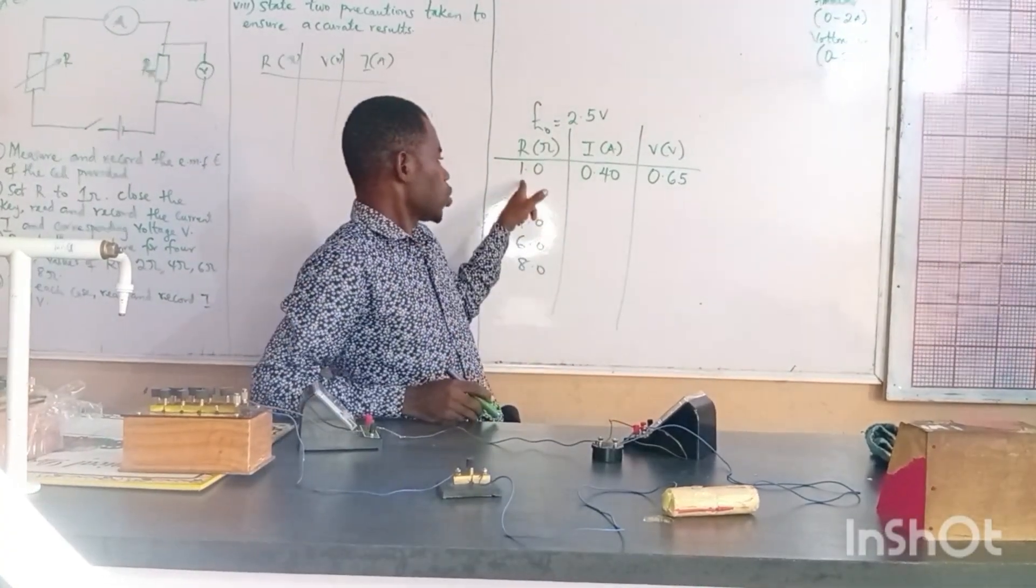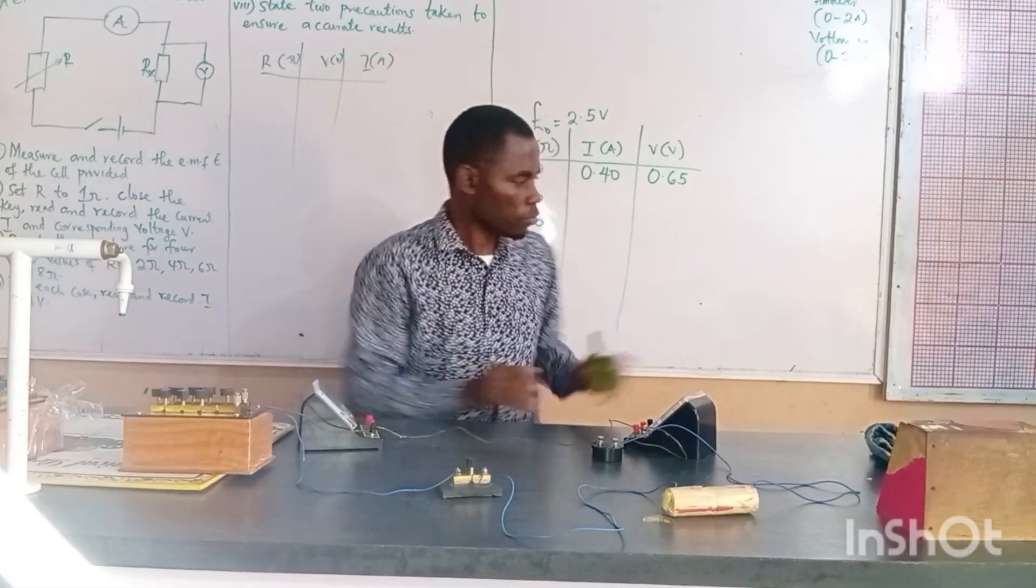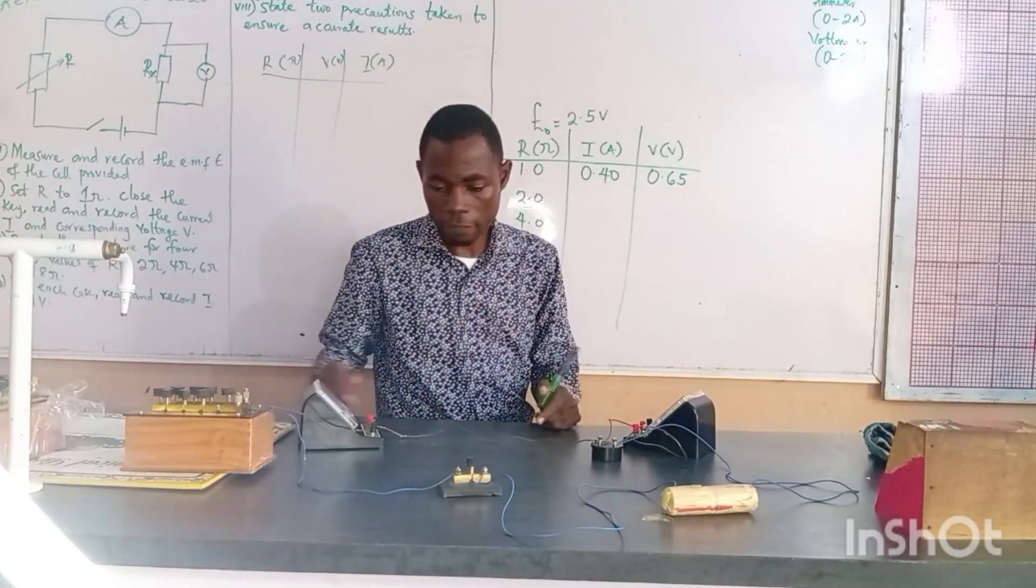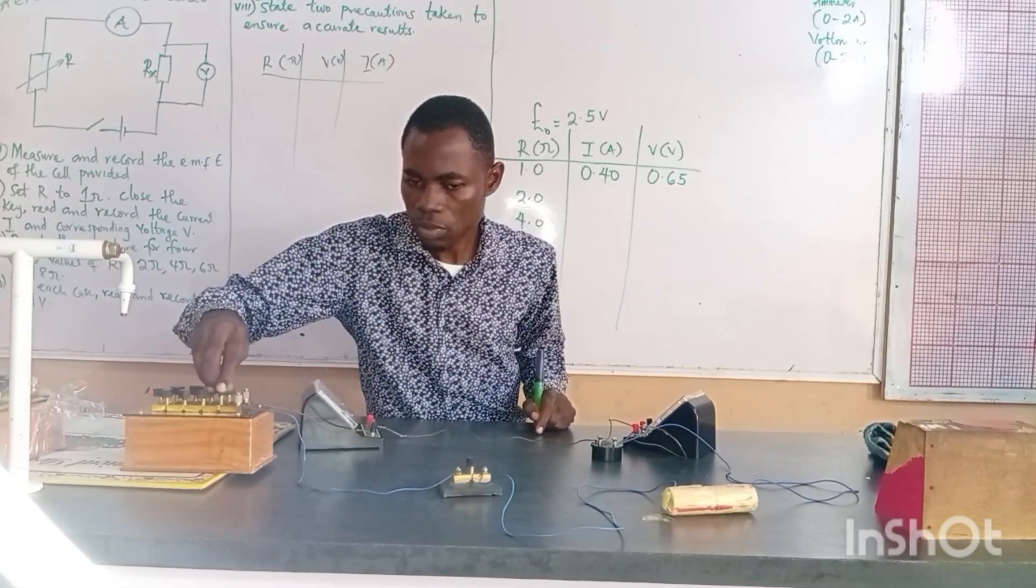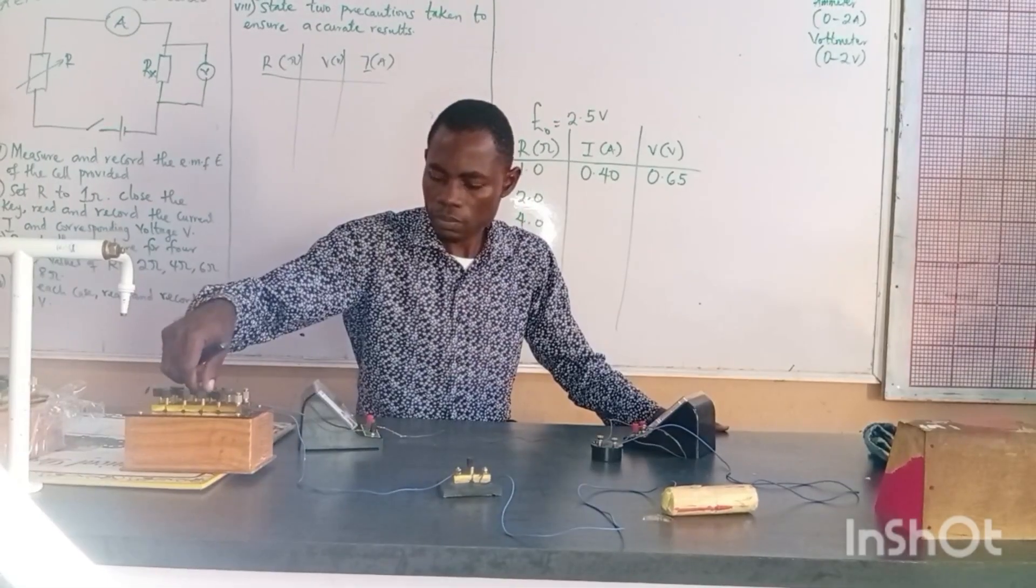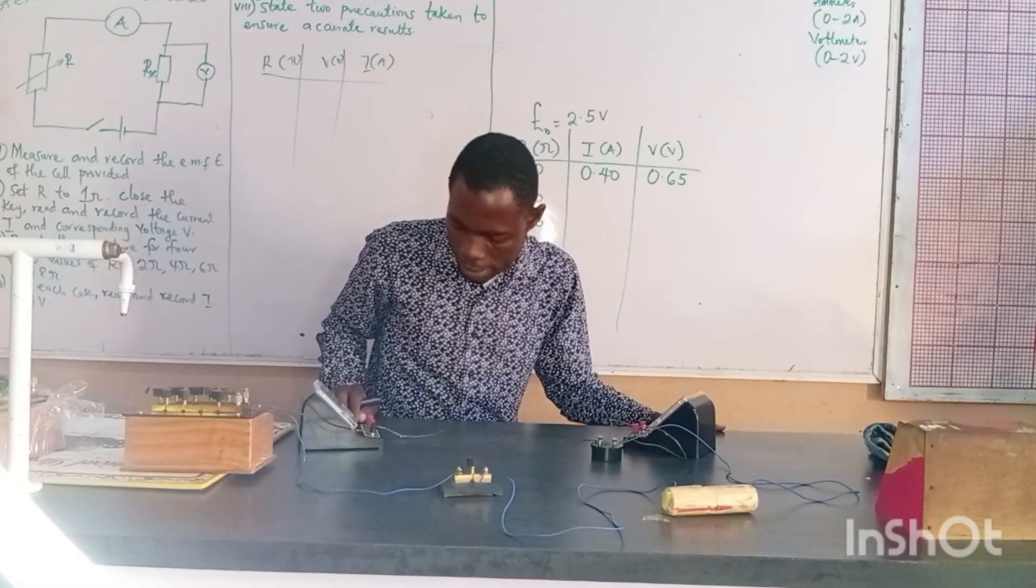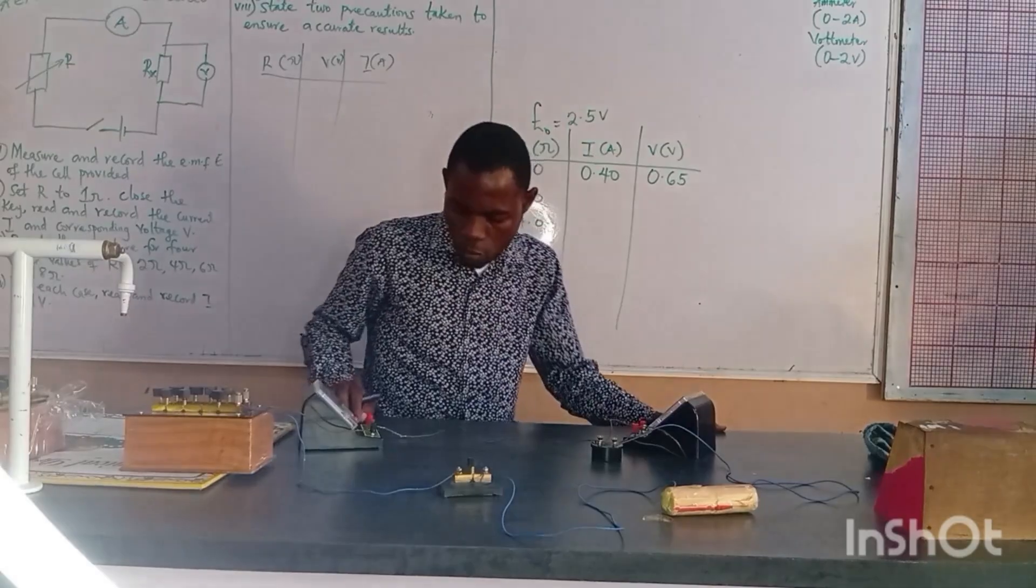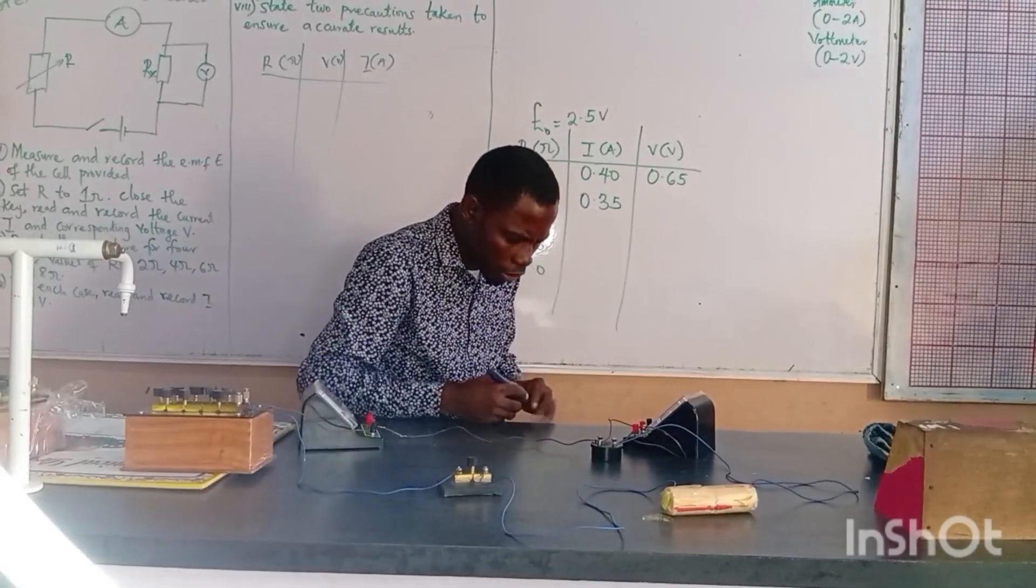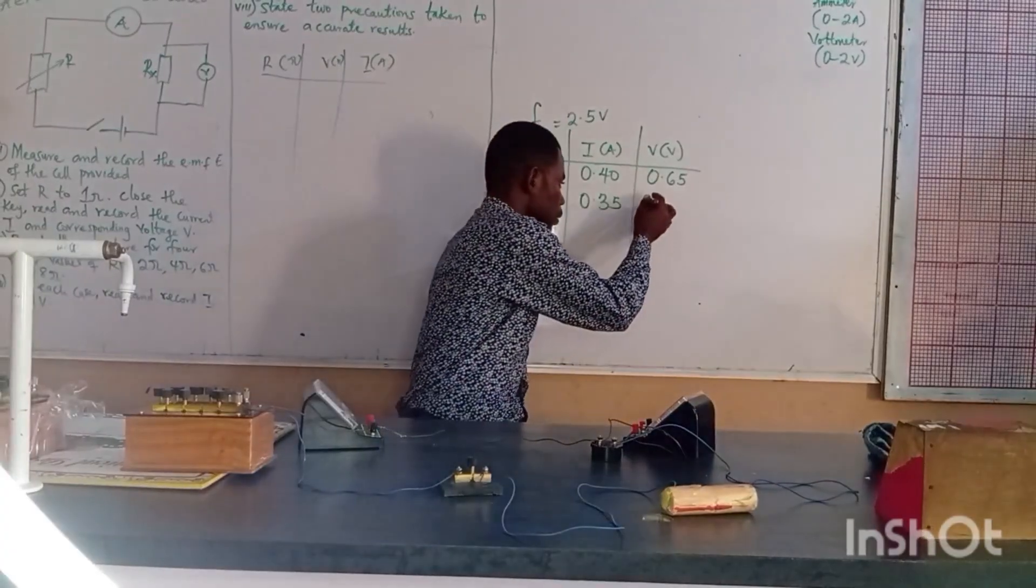That's when the resistor is 1 ohm. Because of time, I don't want us to take much time. I'll fast forward the readings and update the results. Let me do one more before I tidy up. When it is 2 ohms, on my ammeter I can read 0.35 and on my voltmeter I can read 0.57.